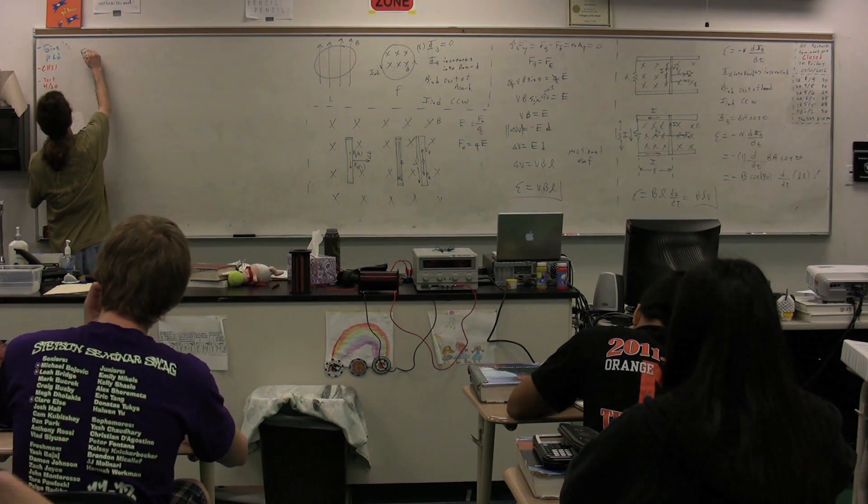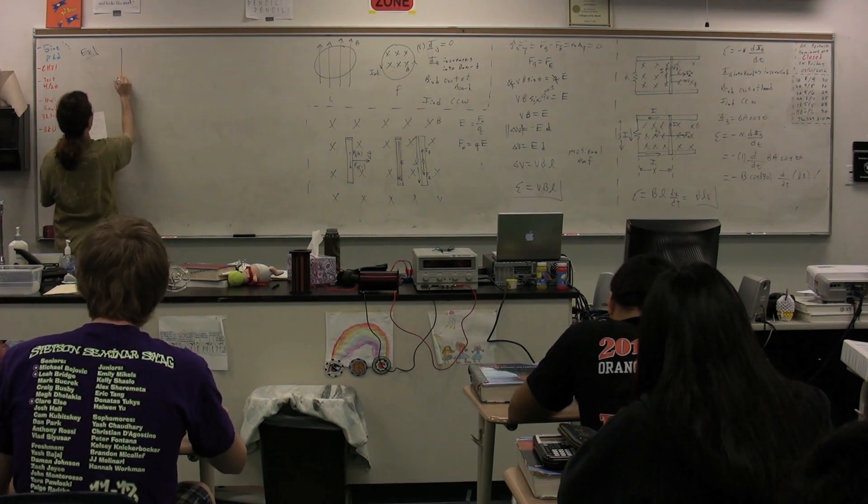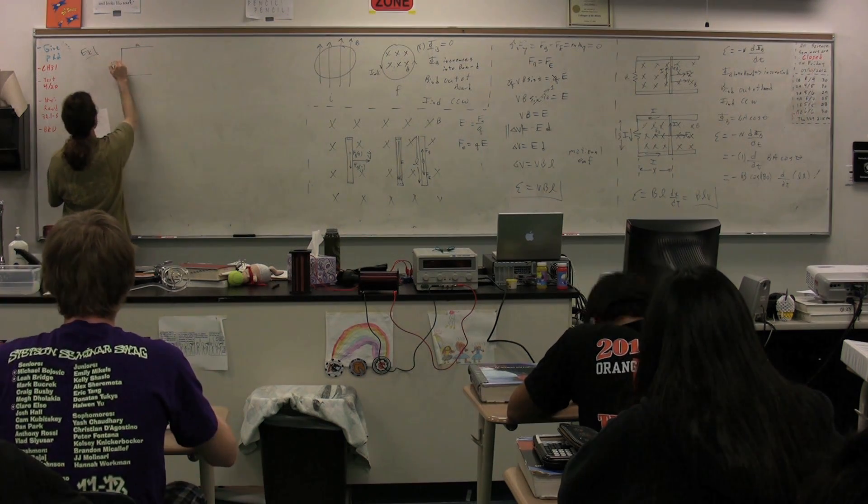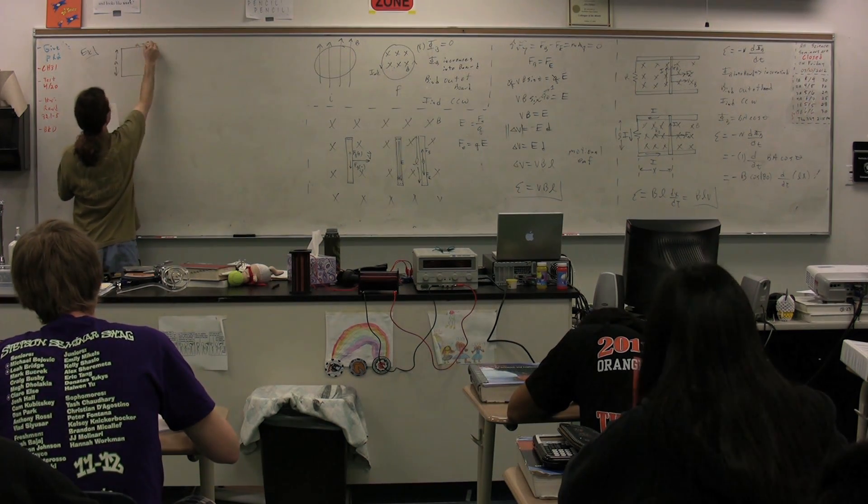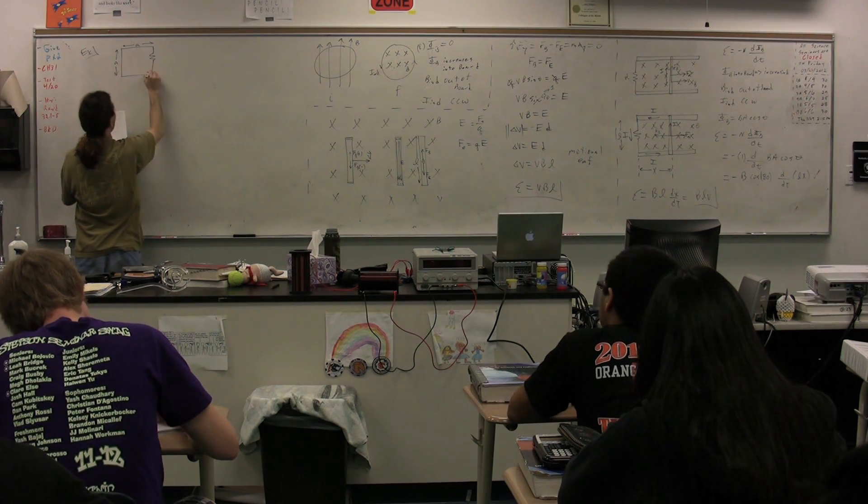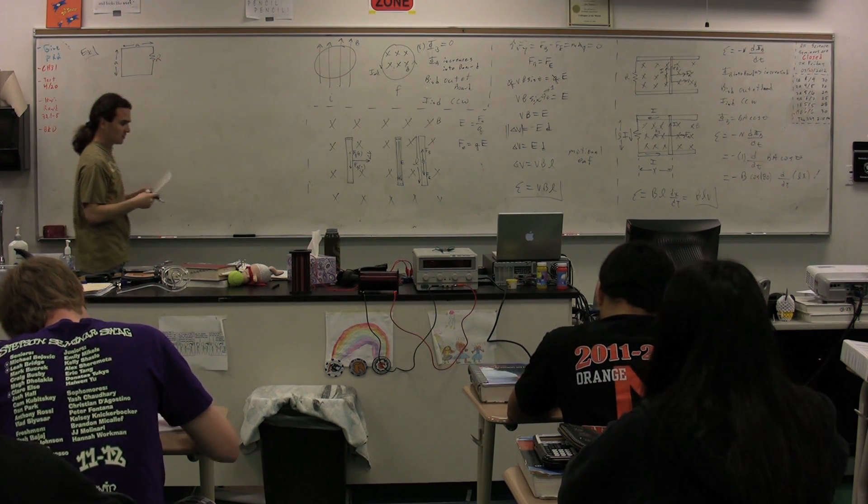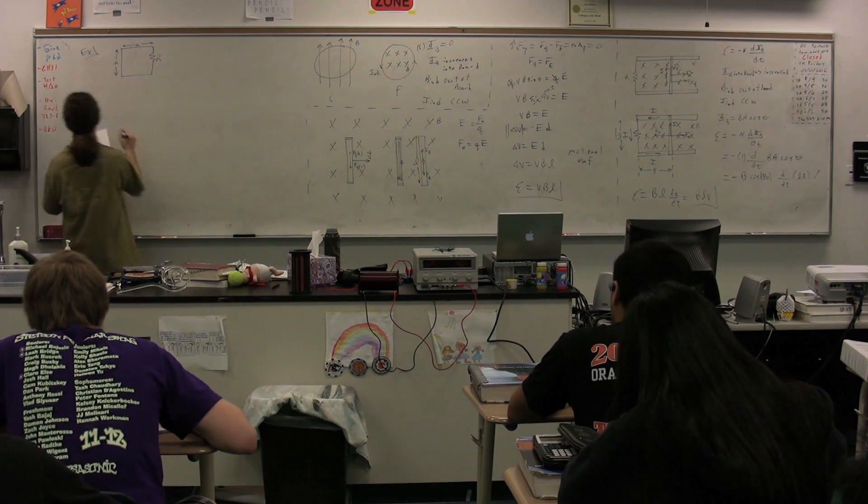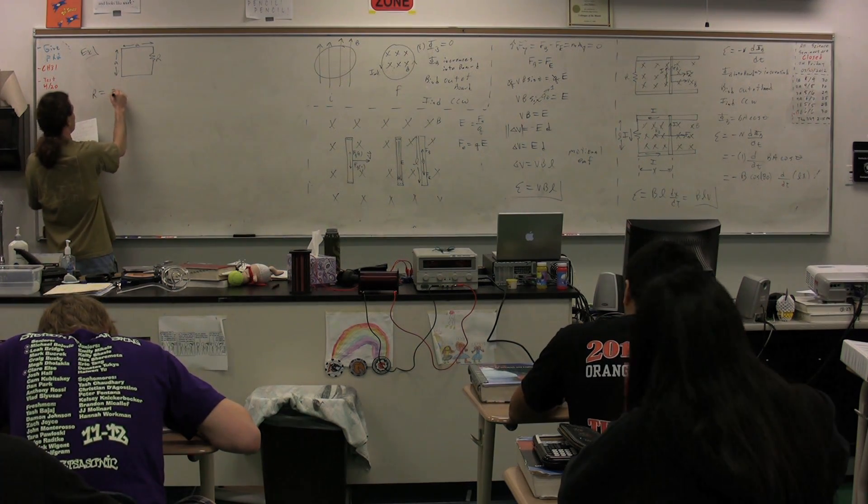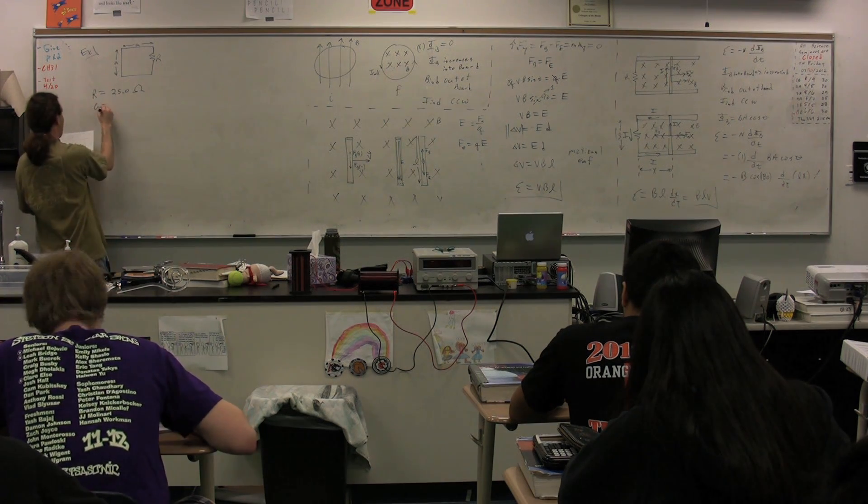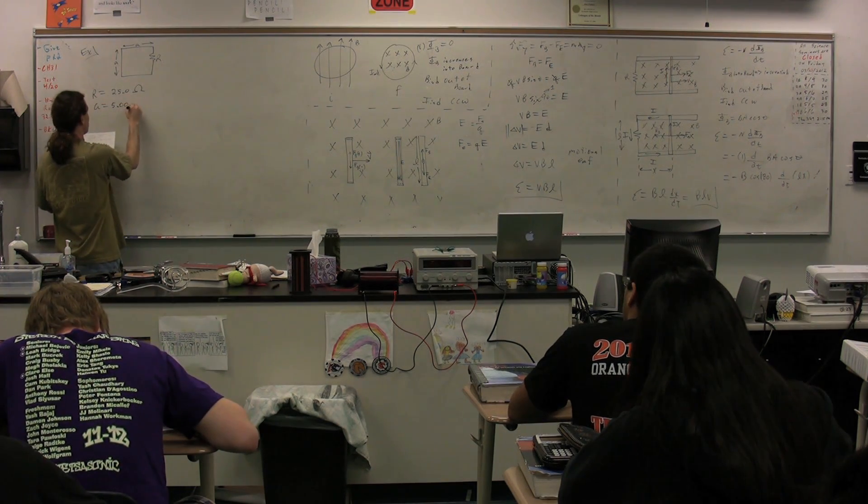All right, in this example, we have a square of wire. This square of wire has side A. I'm going to represent the resistance of this wire with a resistance big R. The resistance of this wire is equal to 25.0 ohms. We know A has a value of 5.00 centimeters.